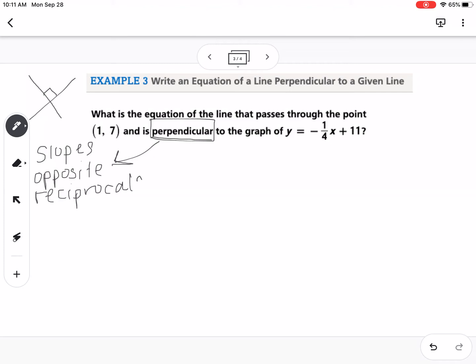So their slopes are what we call opposite reciprocals. So what that means is they're opposite in sign, and you flip them. So if we look here, our slope from this equation is negative 1/4. So the opposite reciprocal, I'm going to abbreviate here, opposite reciprocal of negative 1/4.